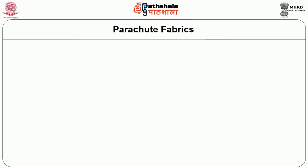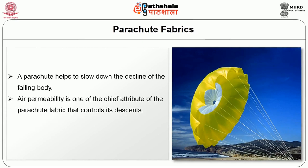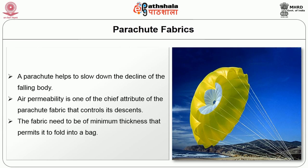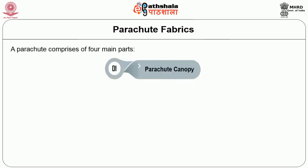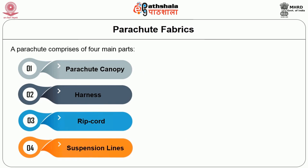Next we shall see about parachute fabrics. A parachute helps to slow down the descent of a falling body. Air permeability is one of the chief attributes of parachute fabrics that controls its descent. The fabric needs to be of minimum thickness that permits it to be folded into a bag. A parachute comprises four major parts: parachute canopy, ripcords, suspension lines and the harness. High tensile nylon yarns with 210 to 840 deniers are used to make webbing, harnesses and tapes because nylon has maximum strength to weight ratio.